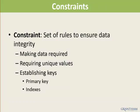Another important element in the ERM model: constraints are restrictions imposed on the data. Constraints include making data mandatory and requiring unique values. Constraints also include establishment of the primary key and indexes. The primary key is an attribute that uniquely identifies a table. Establishing attributes as indexes will improve performance of queries; fields used frequently as search fields can be selected as index constraints.